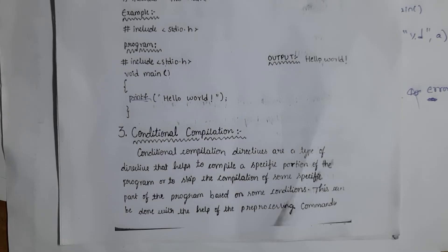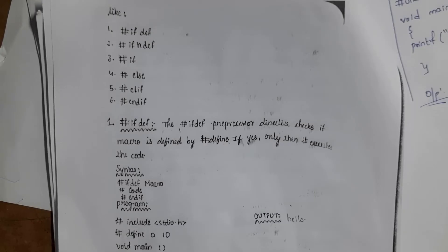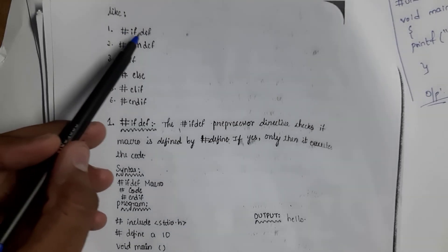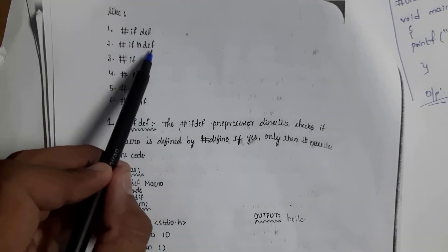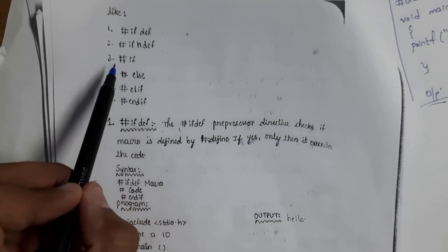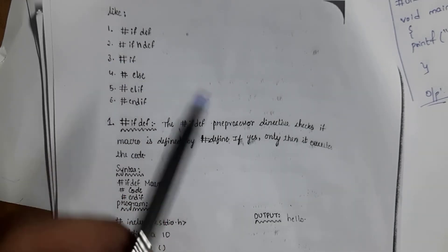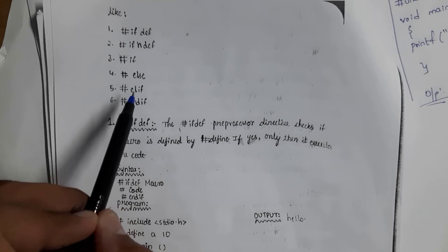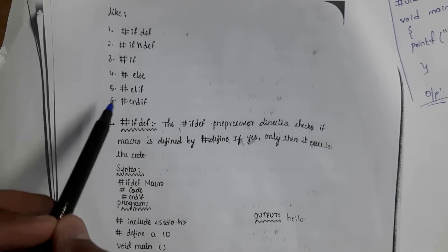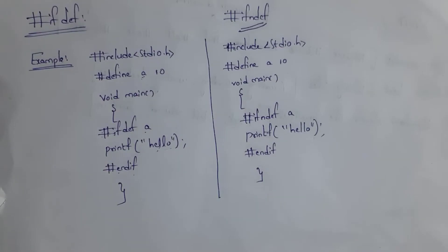The next type is conditional compilation. Similar to how conditional statements like if, if-else, and else-if work, conditional compilation directives also work the same way — generating output based on a condition. There are six types: #ifdef (if defined), #ifndef (if not defined), #if, #else, #elif (else if), and #endif.